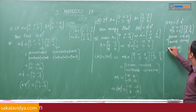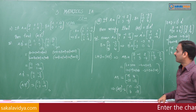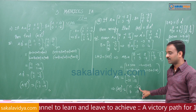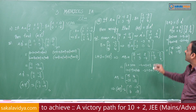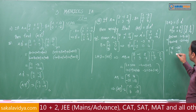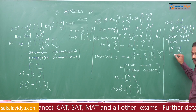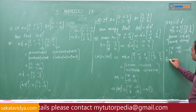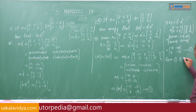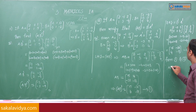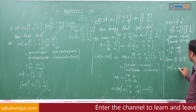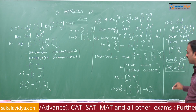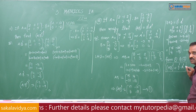RHS B transpose into A transpose equals [[15, -28], [4, -18]]. Comparing LHS and RHS: A·B whole transpose equals [[15, -28], [4, -18]] and B transpose into A transpose also equals [[15, -28], [4, -18]]. From this we conclude that A·B whole transpose equals B transpose into A transpose, which is also a standard formula.